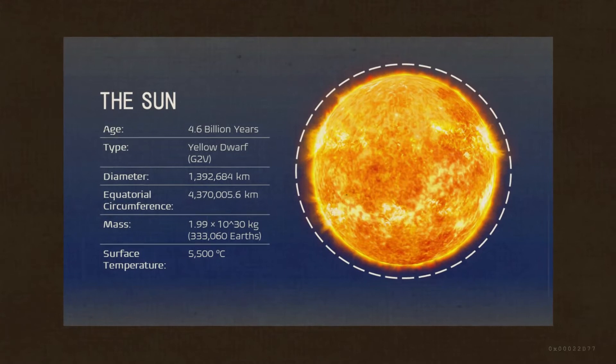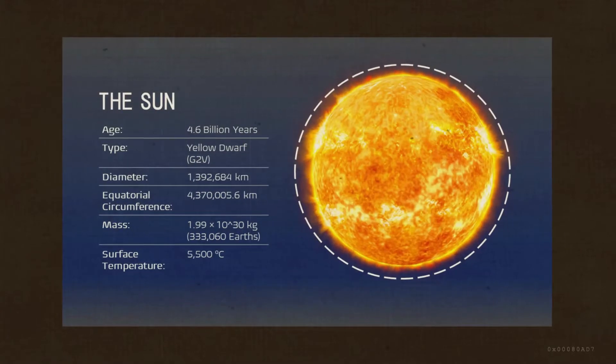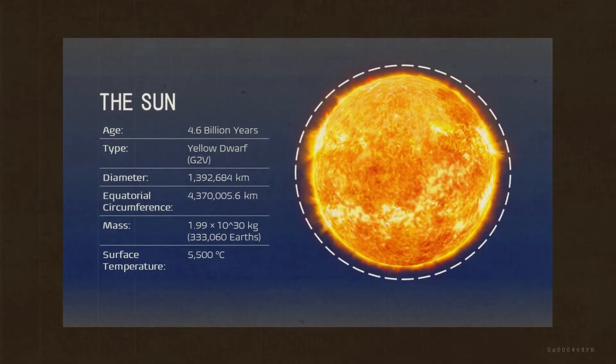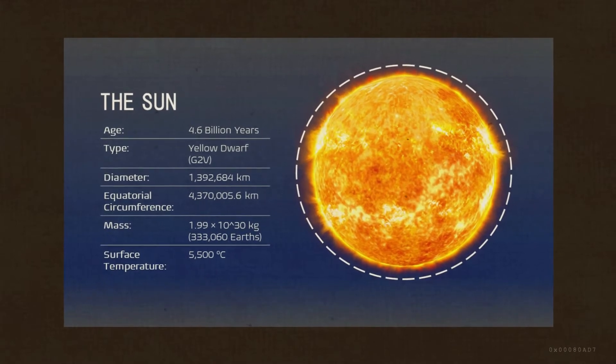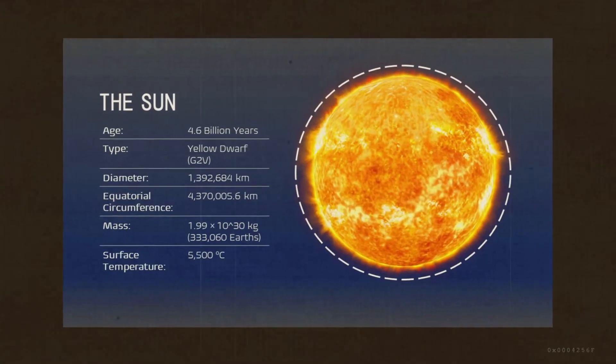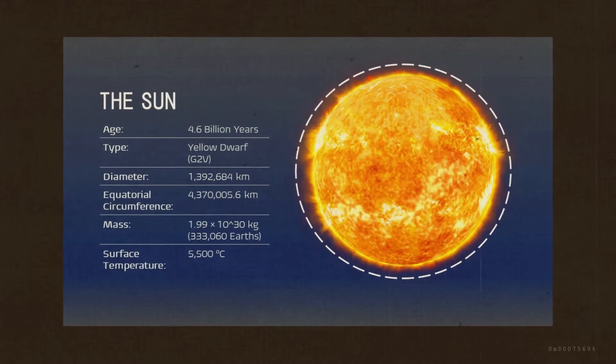The Sun is the center of our solar system. Its gravity holds the solar system together. The Sun is composed of 70% hydrogen, 28% helium, and 2% of other heavier elements.